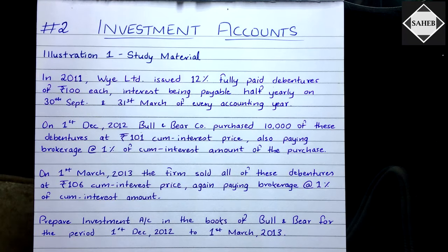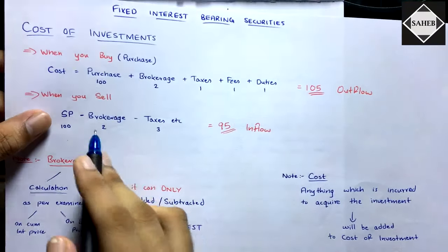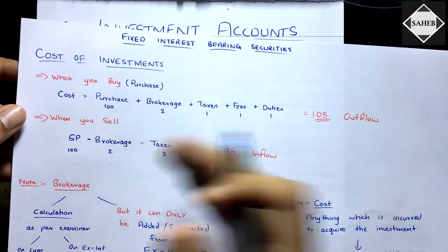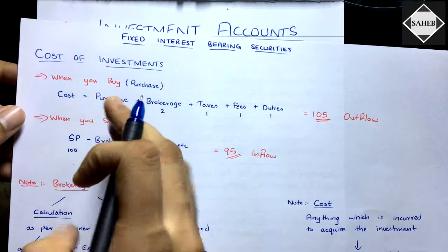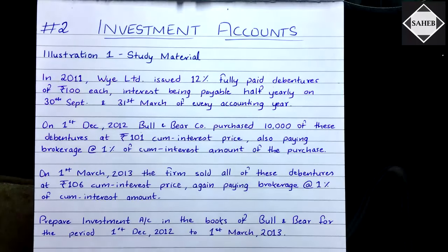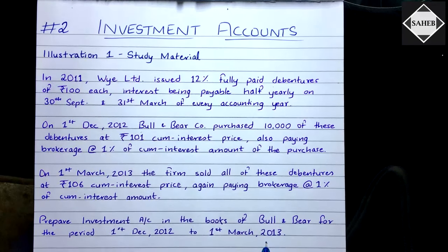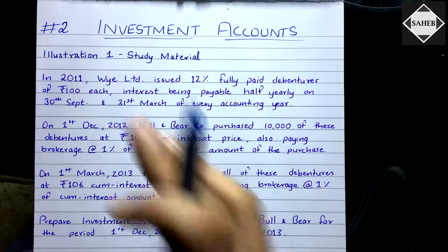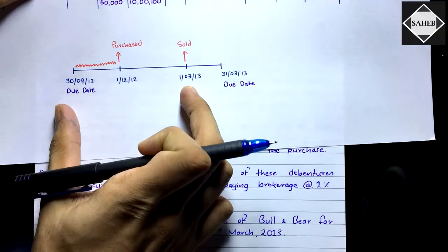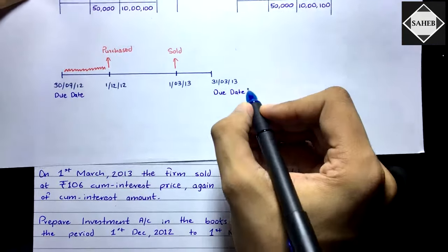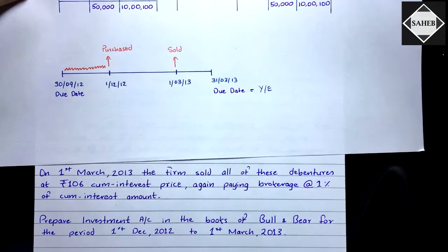Remember: whenever you sell, you deduct all selling expenses; whenever you purchase, you add all purchasing expenses to the purchase price to get the cost. The question requires you to prepare the investment account for the period 1st December 2012 to 1st March 2013. The year-end is 31st March — here the due date equals the year-end.